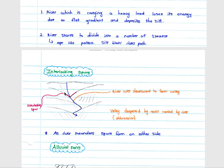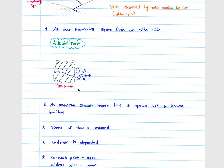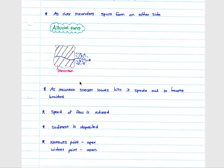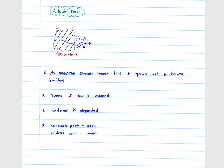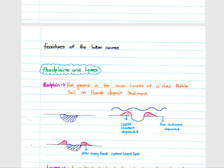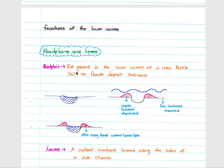Interlocking spurs form where the river cuts downwards to deepen a valley through abrasion. Greater vertical erosion occurs as the river meanders, with spurs forming on either side — high-lying areas form the spurs and low-lying areas form the valley floor. Alluvial fans form when a stream leaves hills and spreads out to become braided. As the river leaves the mountain area, flow speed is reduced and sediment is deposited, forming a fan shape with the narrowest point called the apex and the widest called the apron.